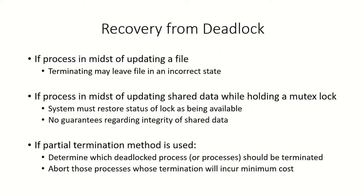Now if a process is terminated there are various situations in which a process might be when it was terminated. There is a possibility that the process was in the middle of updating a file and terminating that process may leave the file in an incorrect state. There is another possibility that the process was in the middle of updating shared data while holding a mutex lock. If this particular process is terminated then the system must restore the status of the lock as now available, and there is no guarantee on the integrity of the shared data because the process was aborted in the middle of updating it.